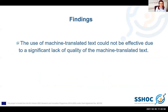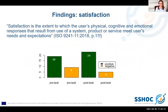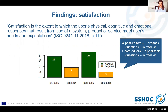The use of machine translated text could not be effective due to a significant lack of quality of the machine translated text. The third dimension of usability I am presenting is satisfaction — the extent to which the user's physical, cognitive and emotional responses resulting from the use of a system, product or service meet user's needs and expectations. Prior to and after the post-editing task, four participants doing the post-editing received pre- and post-task questionnaires, from each of which seven topics were selected to describe overall satisfaction.